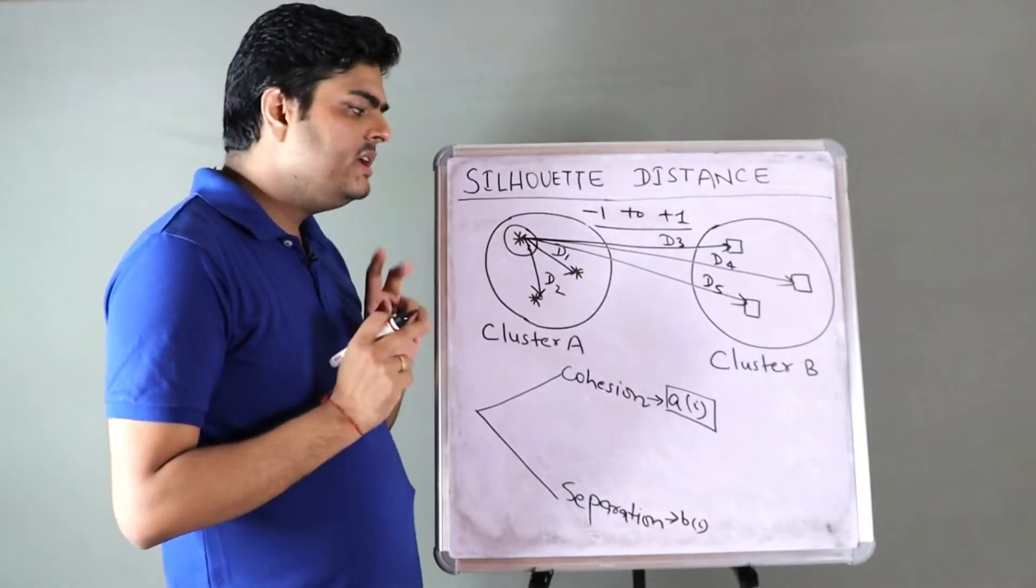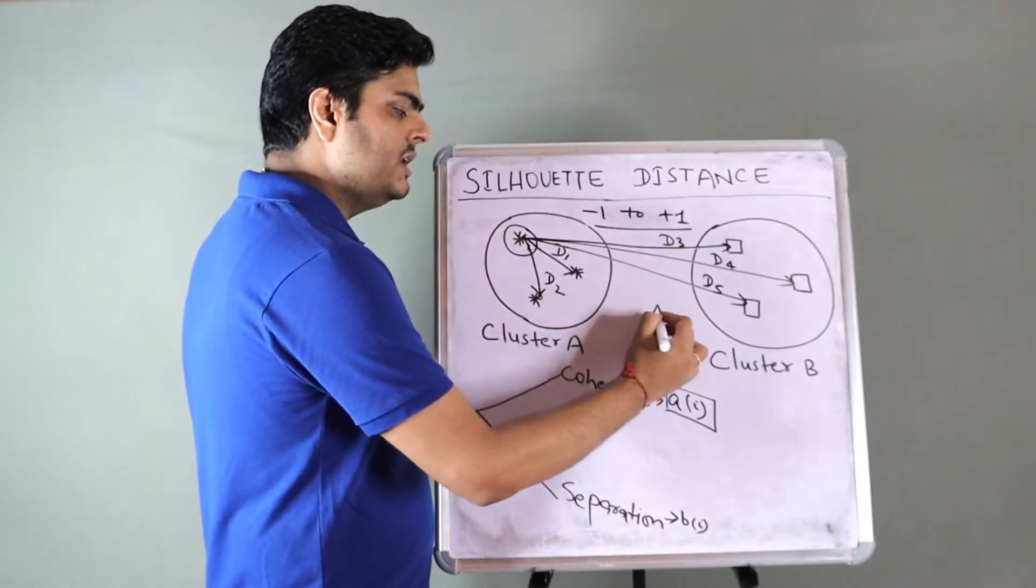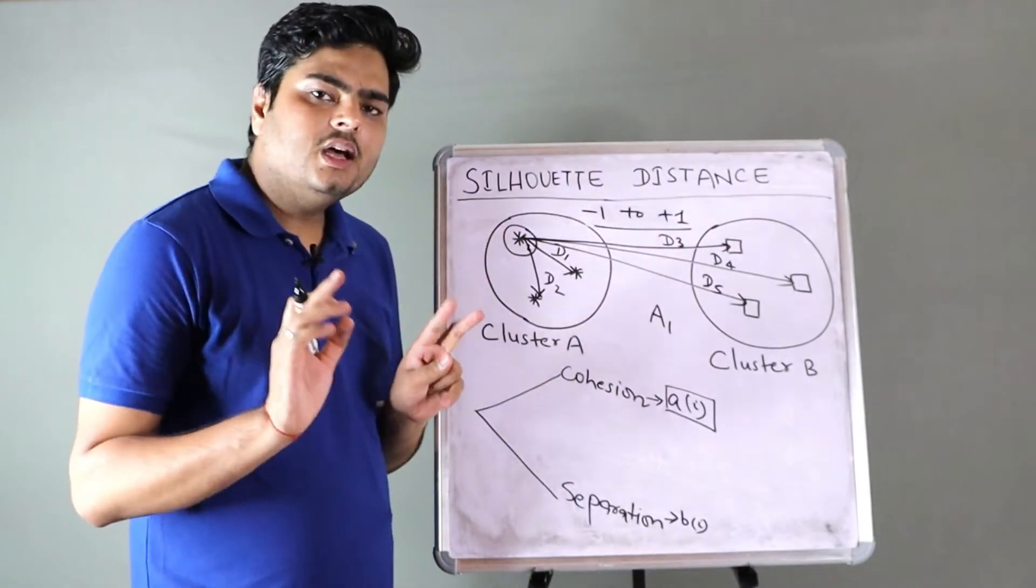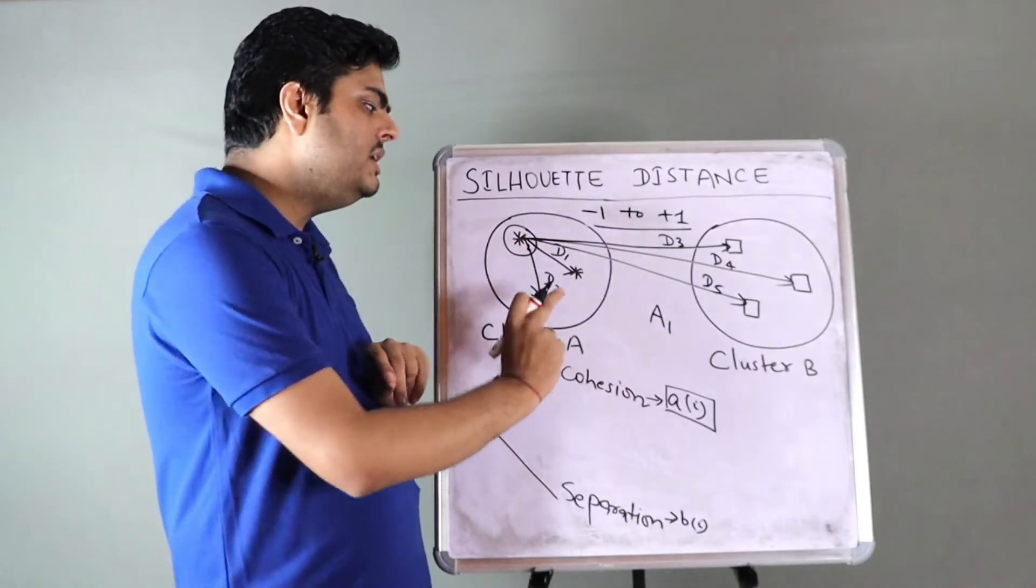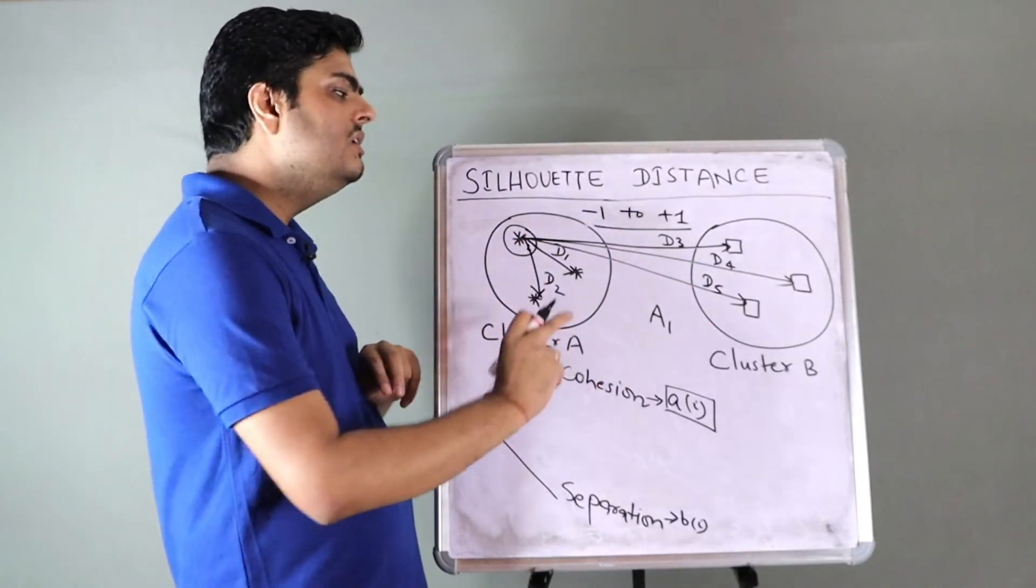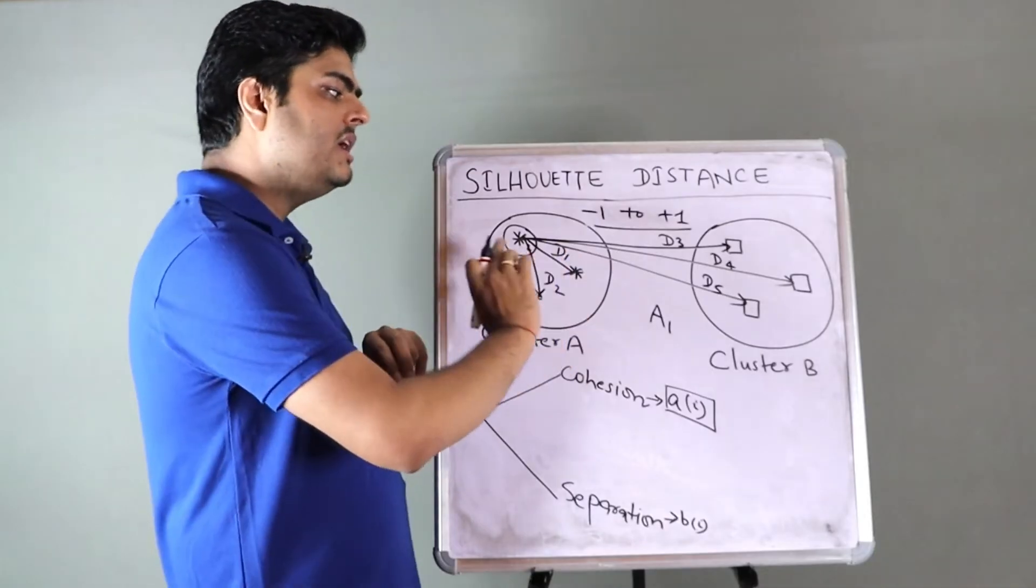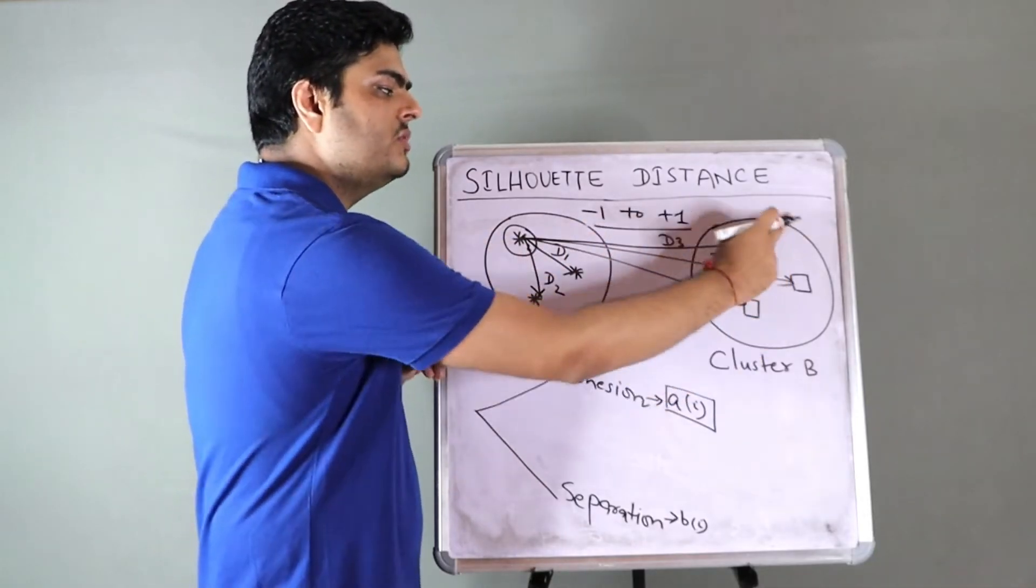There is D1 and there is D2. Take the average of D1 and D2. That becomes your A for this particular data point. Now, this is to measure the cohesion, how closely this cluster is associated with its neighboring same group people or same group items.